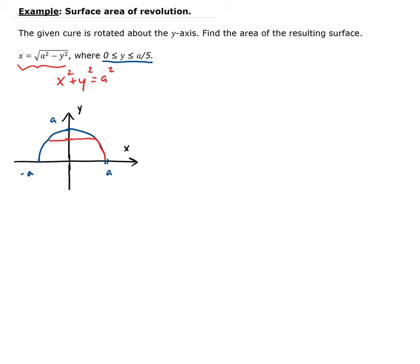This region is going to be revolved around the y-axis. So let's define the surface area formula. The surface area is equal to 2π times the integral from a to b of r(x) times the square root of 1 plus the derivative squared.